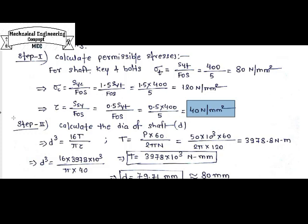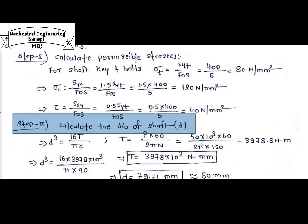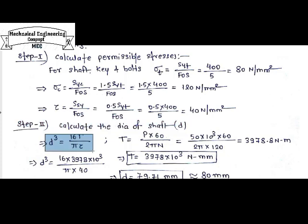After calculating permissible stresses, we calculate the dimensions of the different components used in a split muff coupling. First, we design the shaft, which has a circular cross-section of diameter d. The shaft diameter is calculated using the torsional equation T/J = τ/R. After simplifying, where J is the polar moment and R = d/2, we get: τ = 16T / (π d³), which is our design equation.